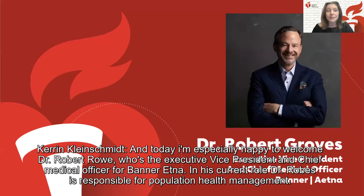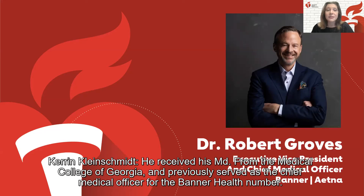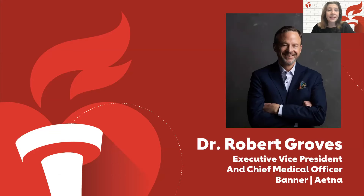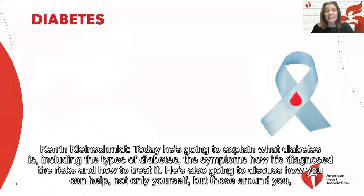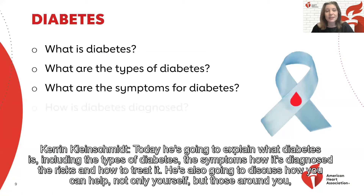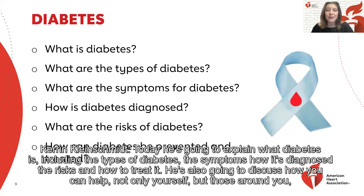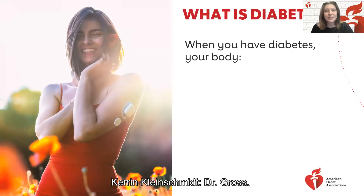Today I'm especially happy to welcome Dr. Robert Groves, who is the executive vice president and chief medical officer for Banner Aetna. In his current role, Dr. Groves is responsible for population health management. He received his MD from the Medical College of Georgia and previously served as the chief medical officer for the Banner Health Network. Today he's going to explain what diabetes is, including the types of diabetes, the symptoms, how it's diagnosed, the risks and how to treat it, and he'll also discuss how you can help not only yourself but those around you.